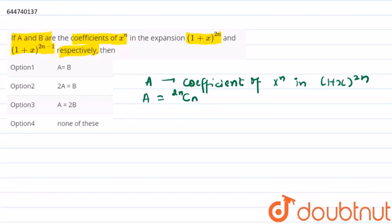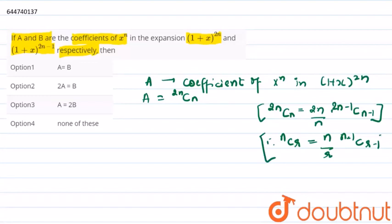Here we can also apply a rule of binomial expansion that 2n C n can be written as 2n upon n into 2n minus 1 C n minus 1. As we can write n C r as n upon r into n minus 1 C r minus 1. So here A can be written as 2 into 2n minus 1 C n minus 1.